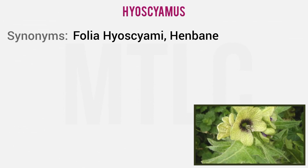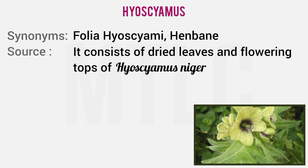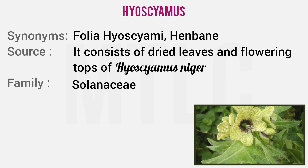Hyoscyamus — this is a synonym: Folia Hyoscyami, Henbane. Very important: Henbane. This is the biological source: dried leaves and flowering tops of Hyoscyamus niger. Hyoscyamus niger is the botanical name. That is the biological source. Family: Solanaceae.